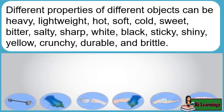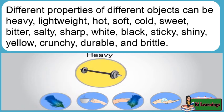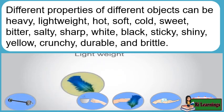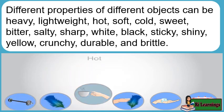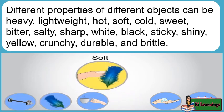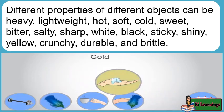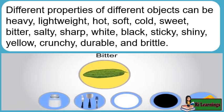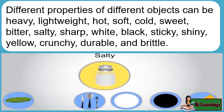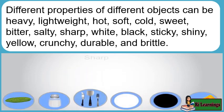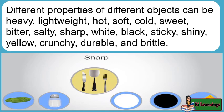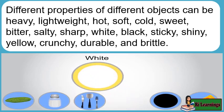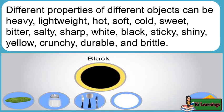Different properties of different objects can be: heavy, lightweight, hot, soft, cold, sweet, bitter, salty, sharp, white, black, sticky, shiny, yellow, crunchy, durable, and brittle.